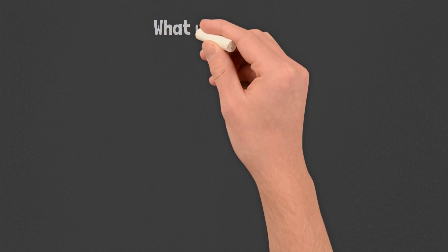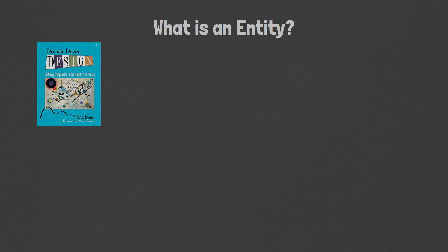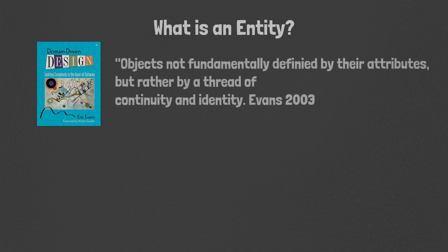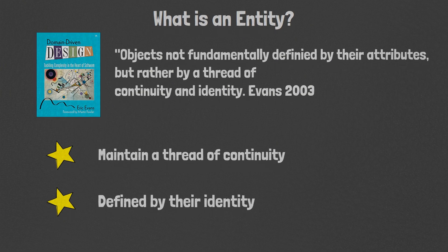What is an entity? An entity, as defined by Eric Evans in his book Domain-Driven Design: Tackling Complexity in Software, are objects not fundamentally defined by their attributes, but rather by a thread of continuity and identity. There are two important principles to understand when working with entities: they maintain a thread of continuity, and they are defined by their identity.